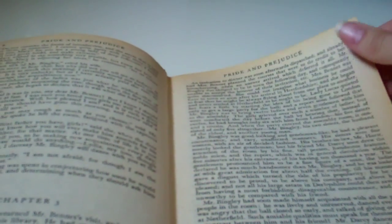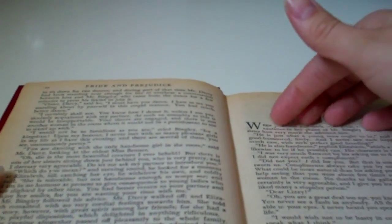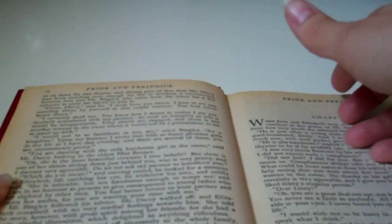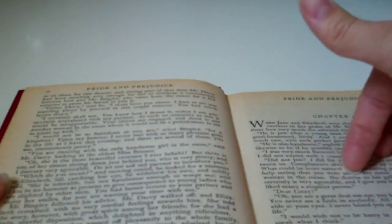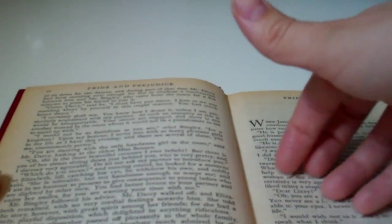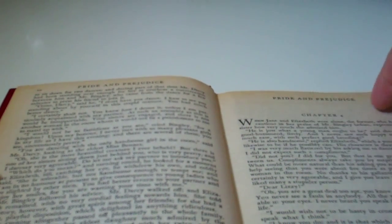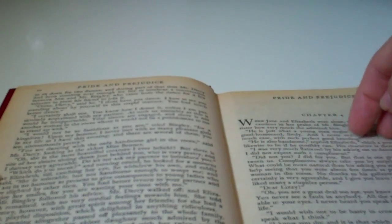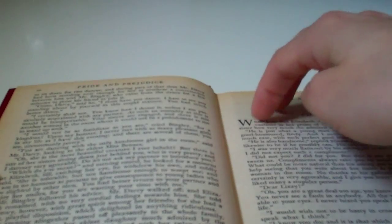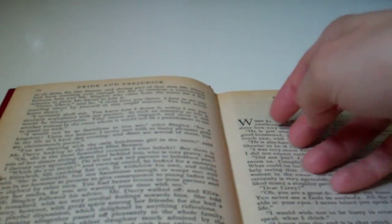Elizabeth Bennet had been obliged by the scarcity of gentlemen to sit down for two dances, and during part of that time Mr. Darcy had been standing near enough for her to overhear a conversation between him and Mr. Bingley, who came from the dance for a few minutes to press his friend to join it. Come, Darcy, said he, I must have you dance. I hate to see you standing about by yourself in this stupid manner. You had much better dance.